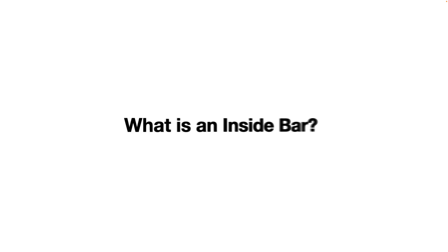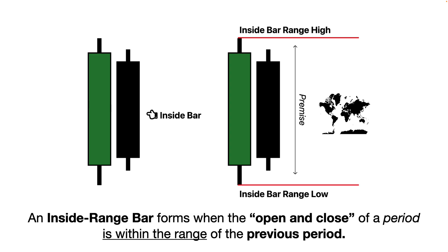So what is an inside bar? An inside bar forms when the open and the close of a period is within the range of the previous period. So let's say this is a candle close — it could be a weekly or daily candle close. What makes it an inside range bar is that it closes within the premise of the previous range. When confirmed, this gives us the premise to operate within.